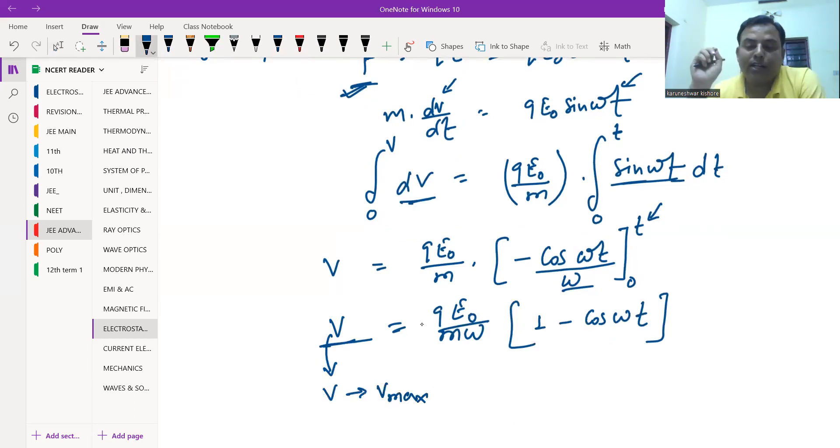This final result needs to be maximum. It will be maximum when the cosine function becomes minimum, which is −1. For velocity to be maximum, cos(ωt) = −1.